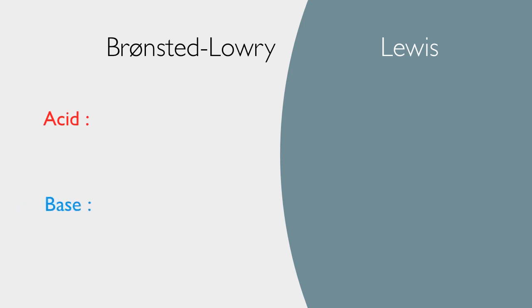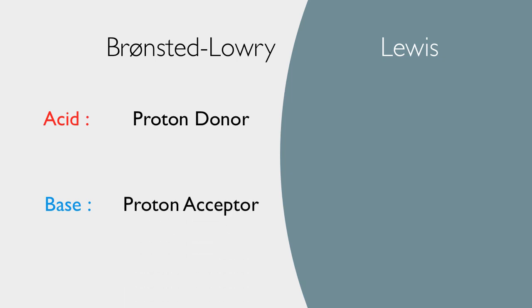In Bronsted-Lowry, an acid is a proton donor, and a base is a proton acceptor. In other words, Bronsted-Lowry theory is just about passing around protons, the same thing as a hydrogen cation.